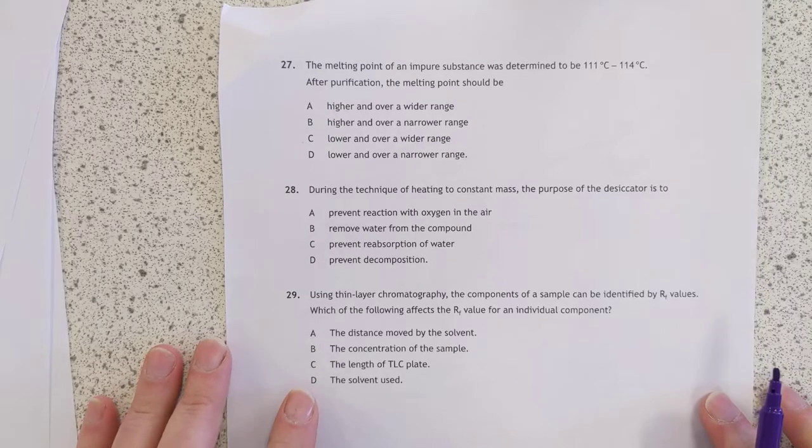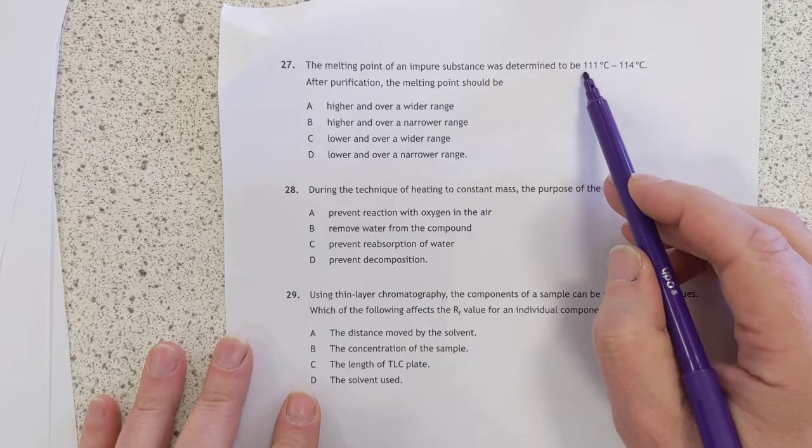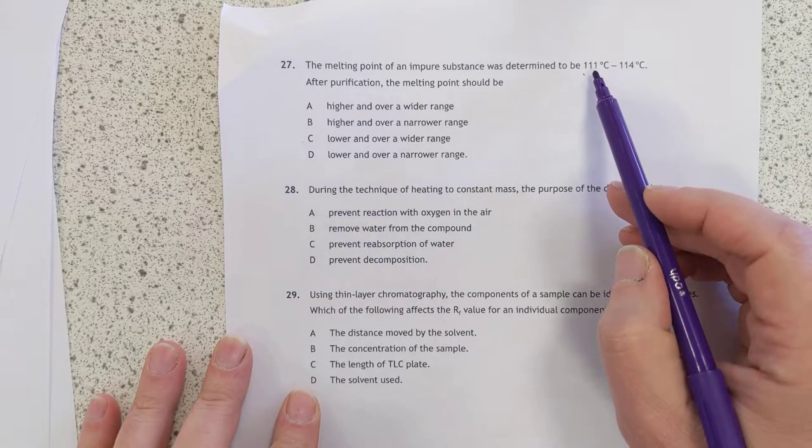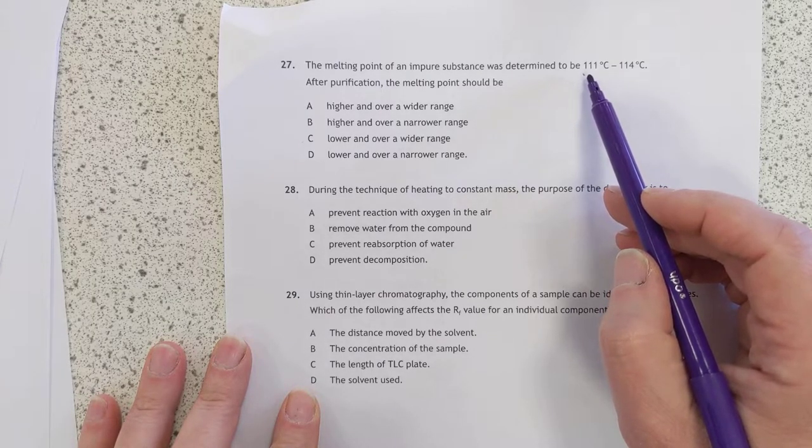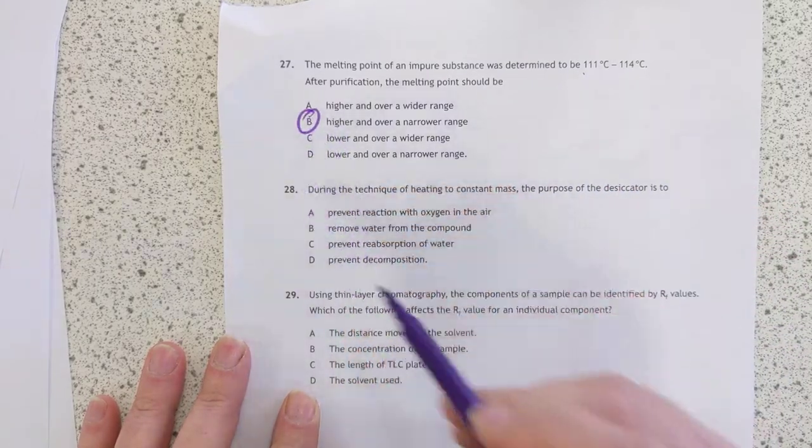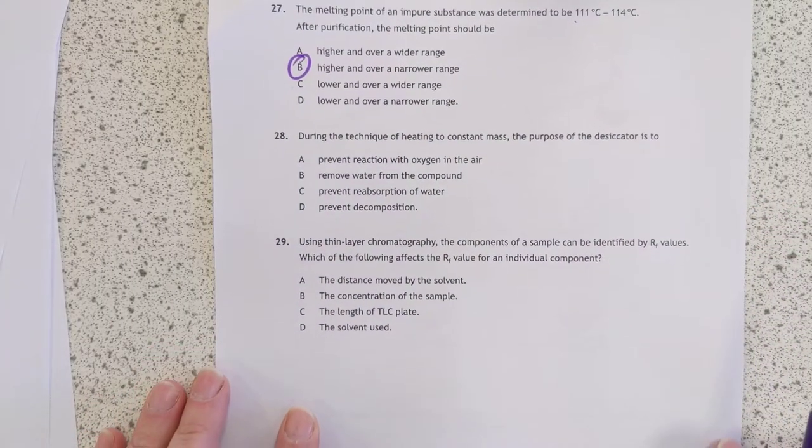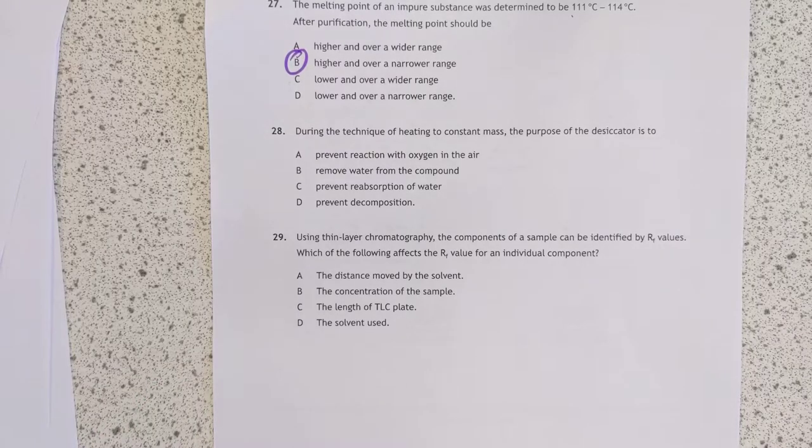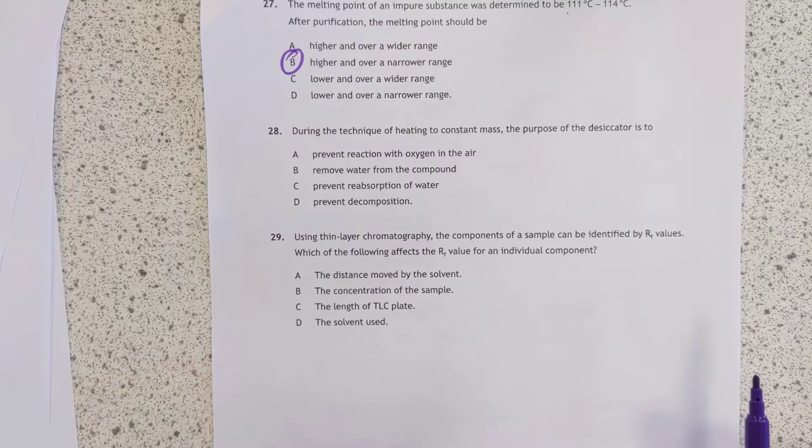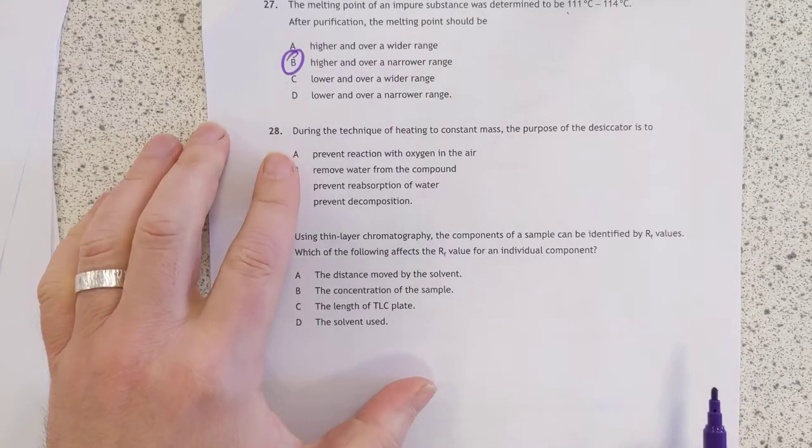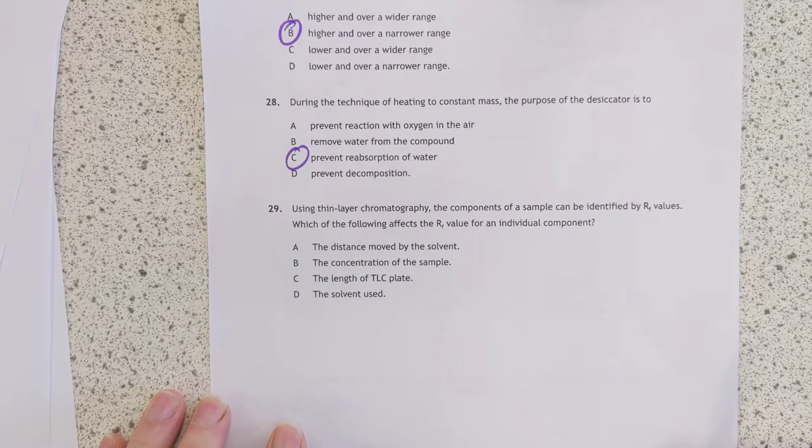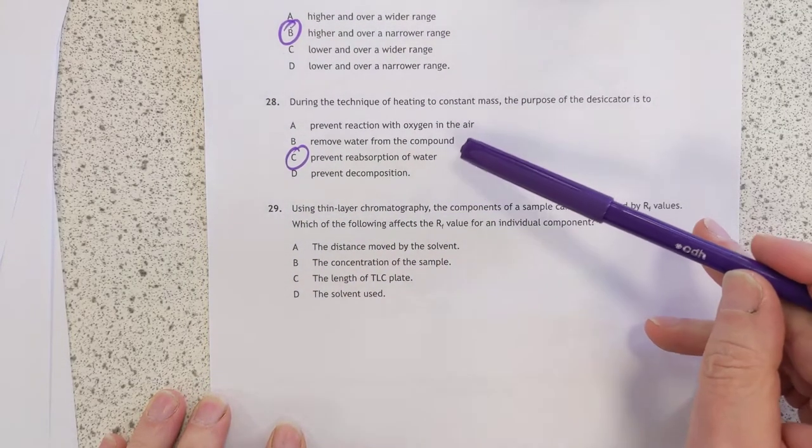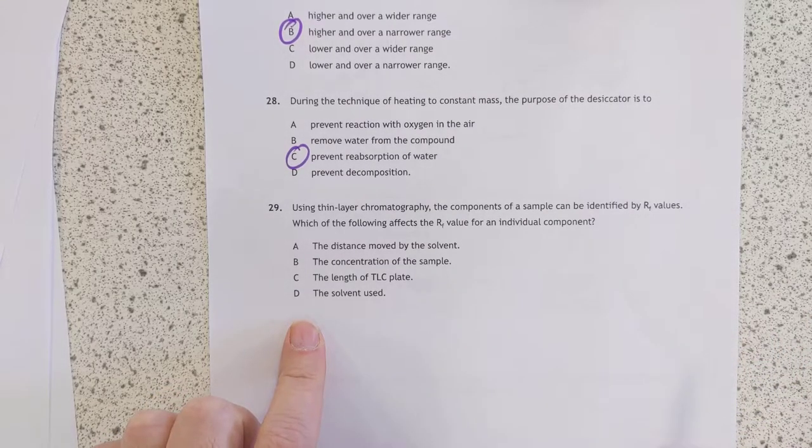27. Melting point of an impure substance was determined to be that after purification, the melting point should always be higher because impure substances always have a lower melting point and it should be a narrower range. So the answer is B. 28. During the technique of heating to constant mass, lots of practical questions here, eh? The purpose of the desiccator, that is to stop water getting reabsorbed. Basically is the, that's C. While it's cooling that is, go and watch my video on practical techniques if you haven't already done this in the classroom.